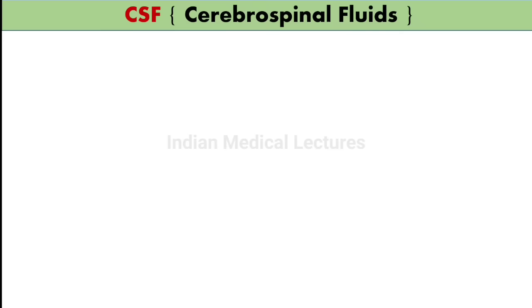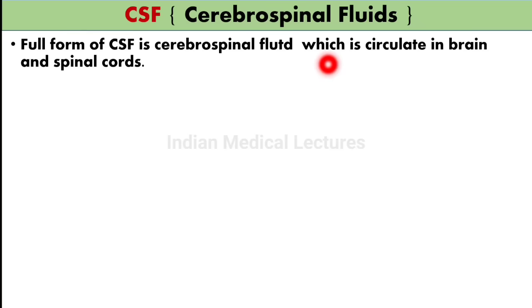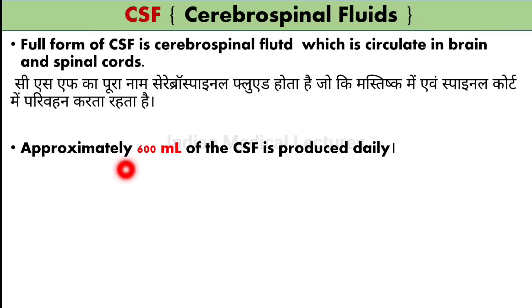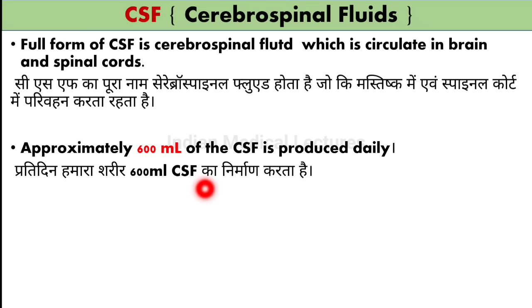First, we will see what is Cerebral Spinal Fluid. CSF stands for Cerebral Spinal Fluid, which is circulated in the brain and spinal cord. 600 ml of CSF is produced daily — every day, 600 ml per day.